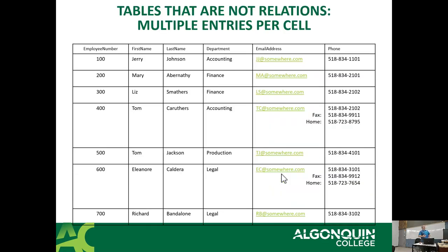This other example is not a proper relation. If you look at it, you'll see phone number with multiple entries at the same time for a given row — row 400 has three entries under phone. The rule to be a proper relation is there can only ever be one value at a given intersection. Later you're going to learn how to fix this mess through normalization.